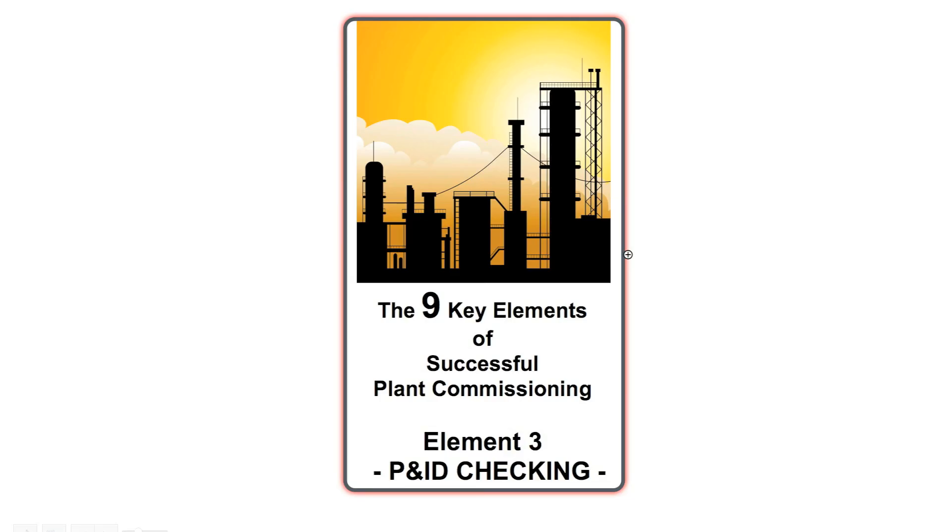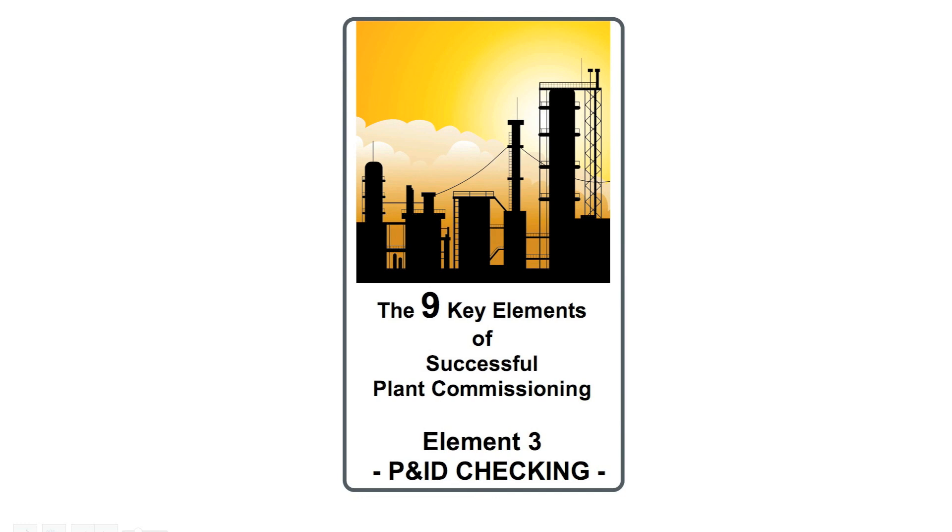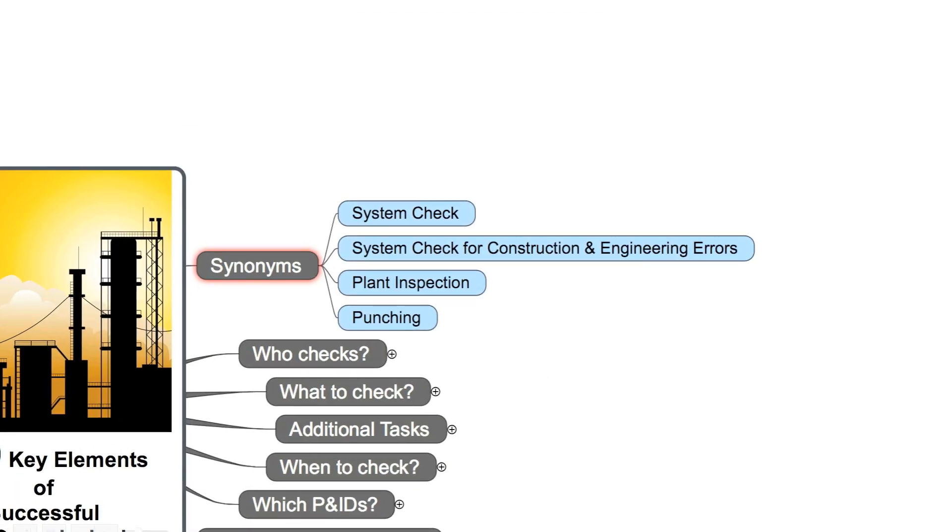The 9 key elements of successful plant commissioning, Element 3: P&ID checking. You can say as well system check, system check for construction and engineering errors, plant inspection, or punching. All these words are synonyms for P&ID checking.